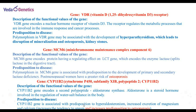The third gene that can help us estimate risk factors connected with calcium is the gene CYP11B2. The CYP11B2 gene encodes the polypeptide aldosterone. Aldosterone is a steroid hormone involved in the regulation of water-salt balance in the body.